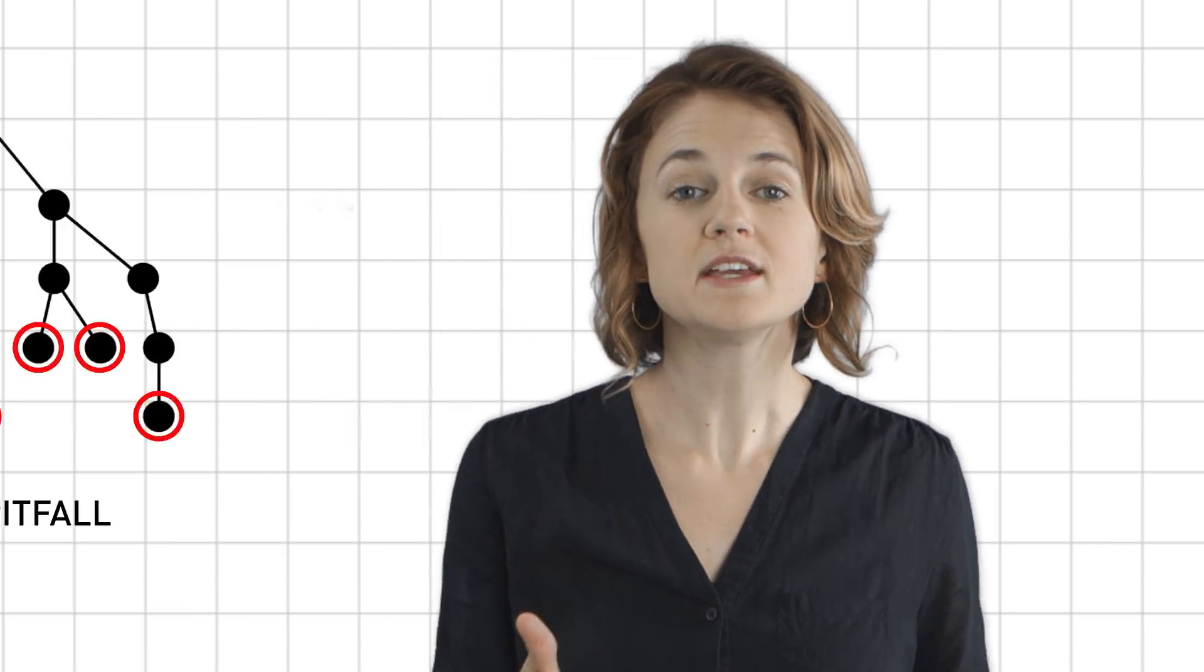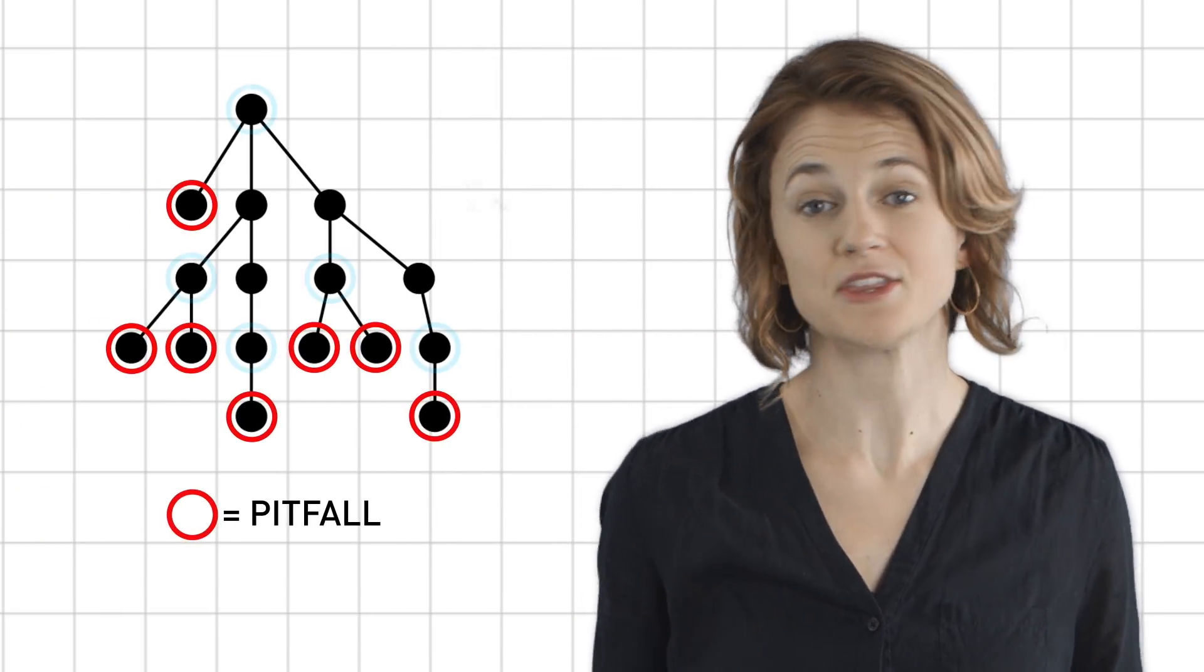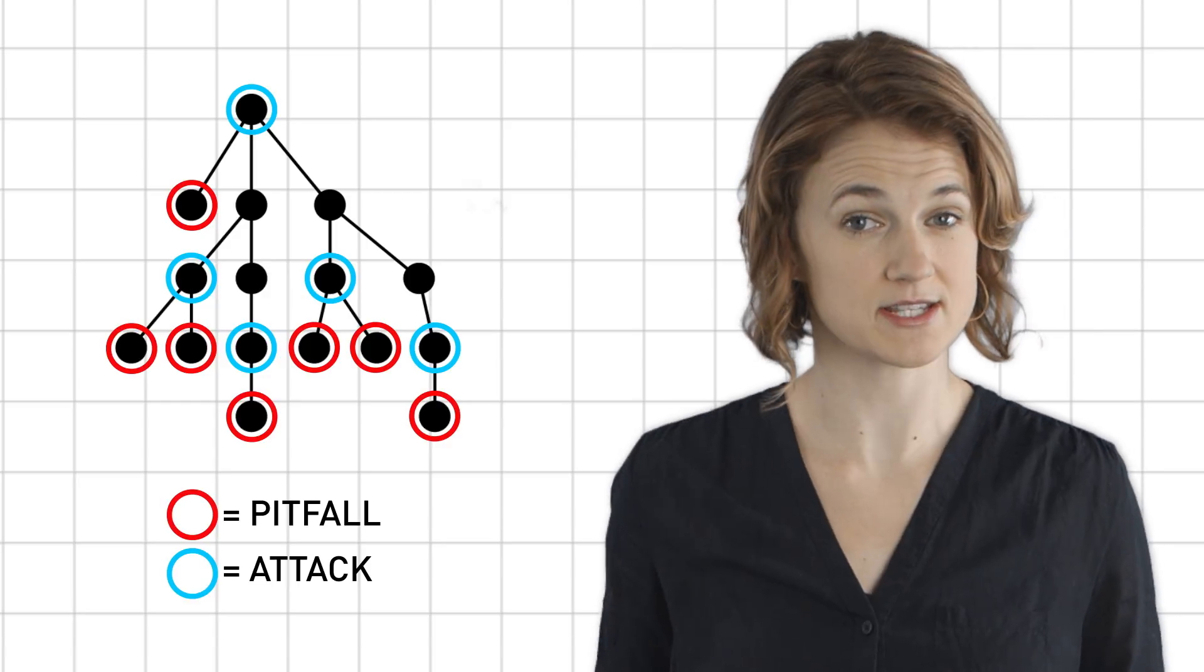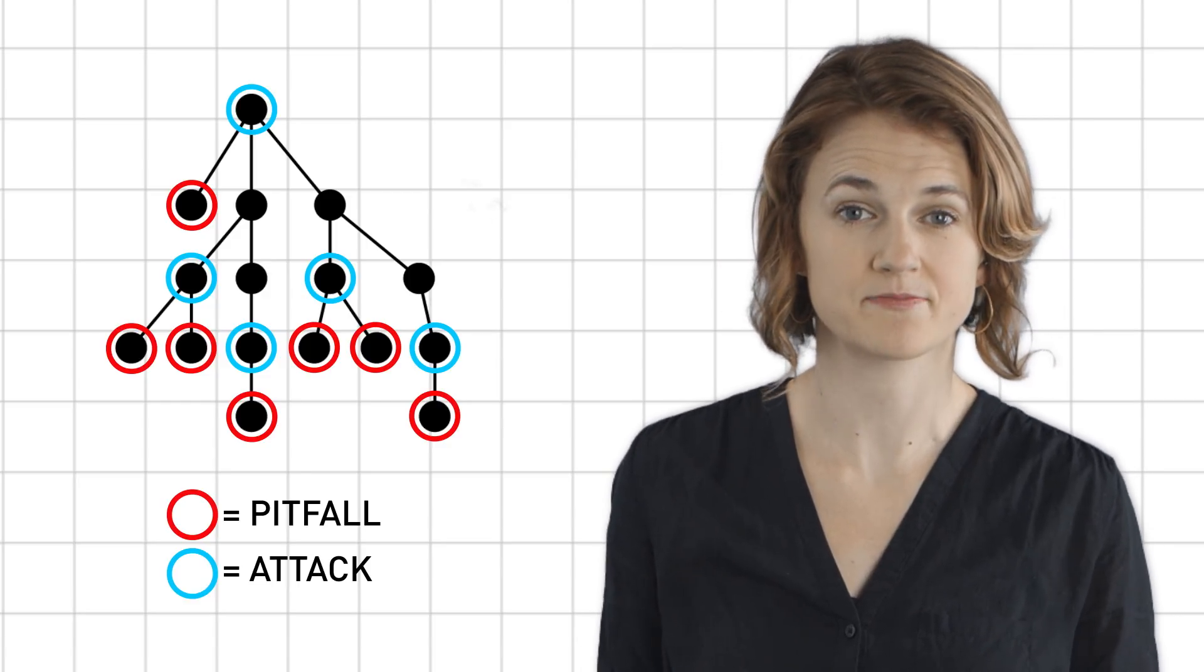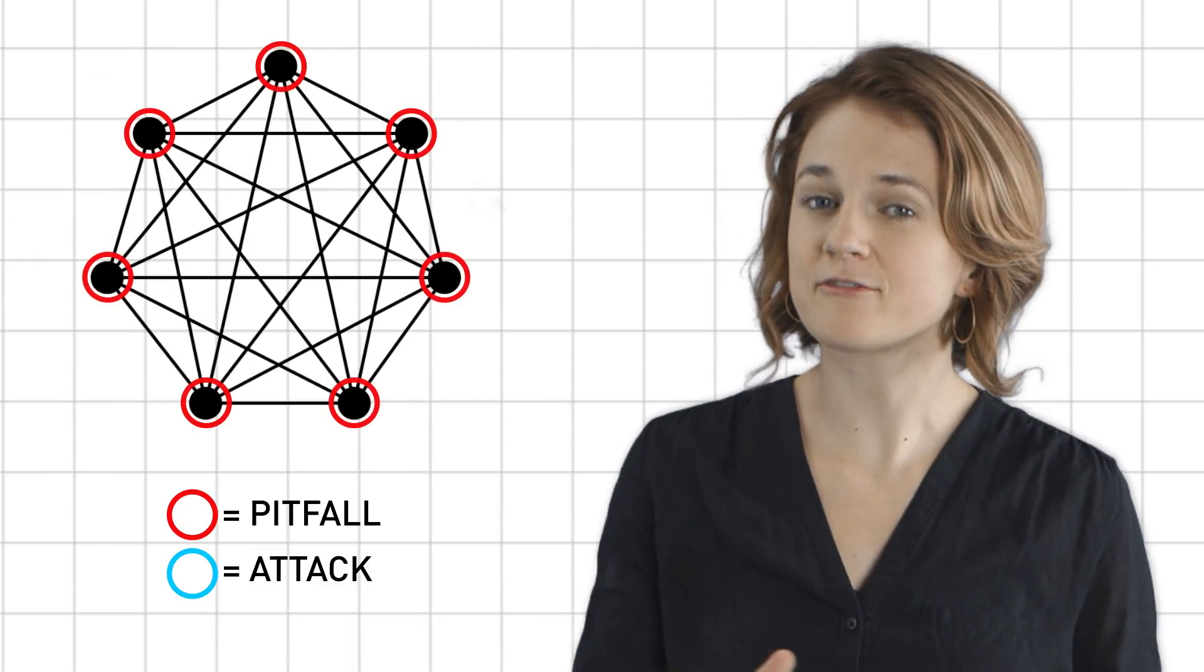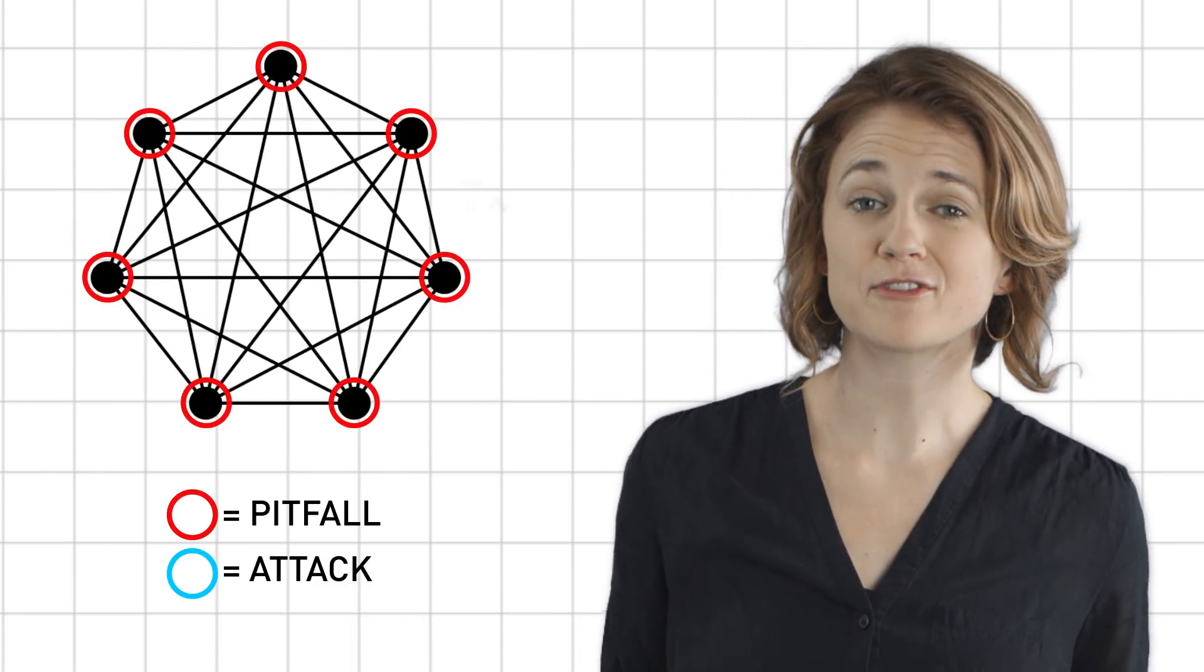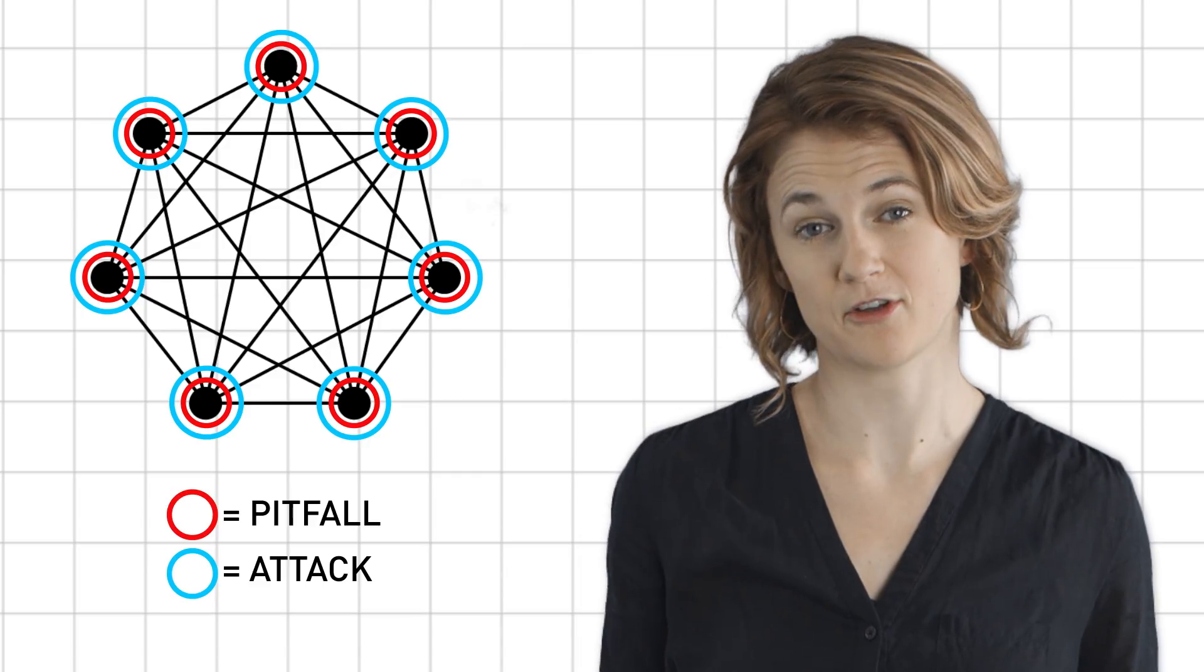For example, these are the pitfalls in the tree, and these are the associated attack vertices, where the cop would stand to capture a robber on the pitfall vertex. On the complete graph, every vertex is a pitfall, and every vertex is an attack vertex for every pitfall.